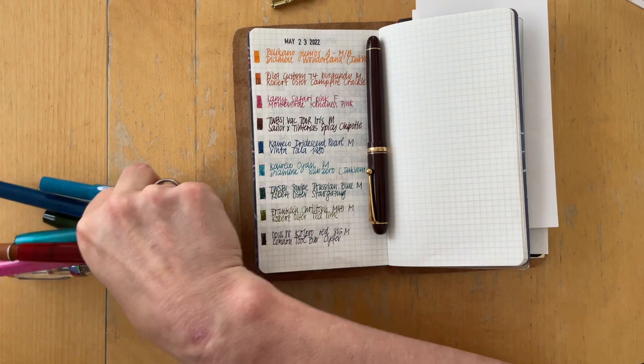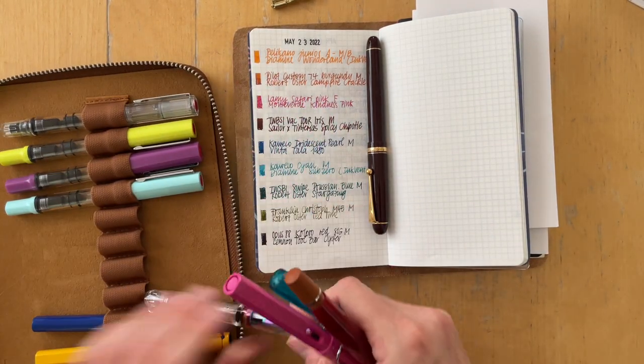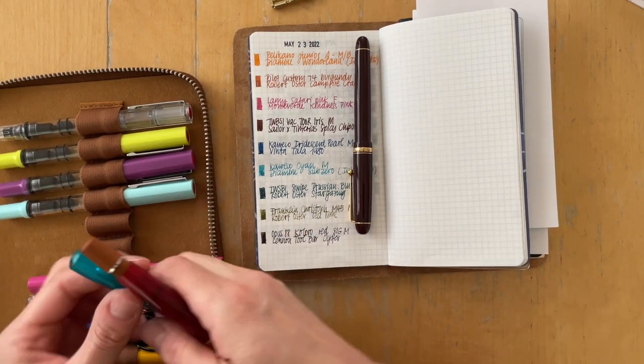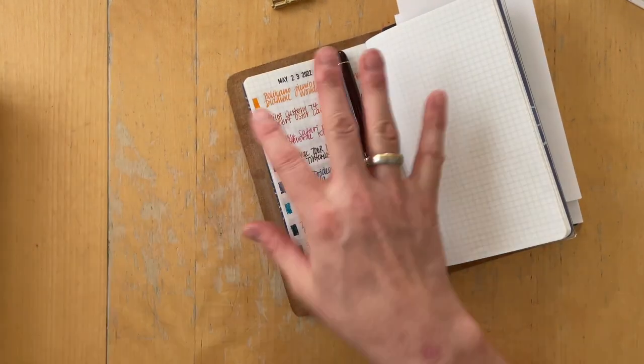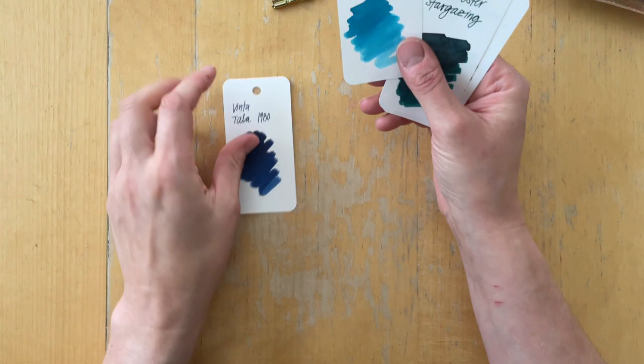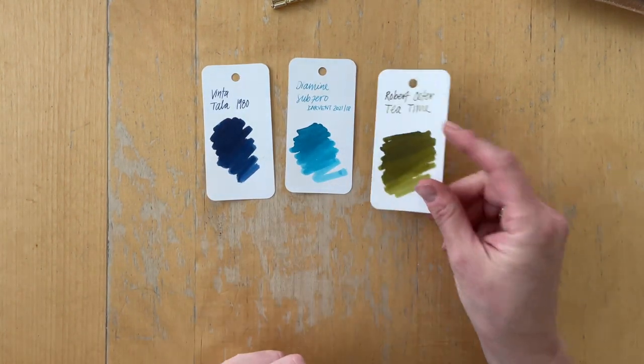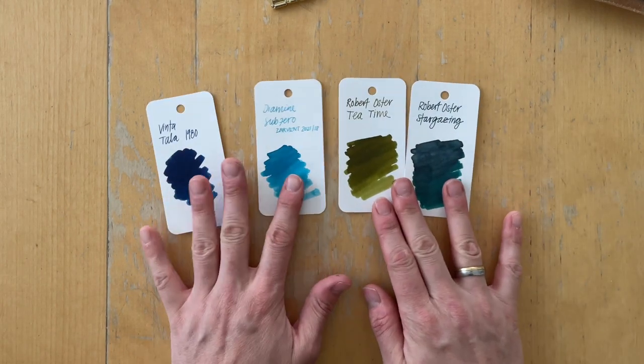And then I went and picked a color palette that would work with the colors that were still left over. And let me just grab those and show those to you. So that was the Vinta Tala, the Diamine Sub-Zero, the Robert Oster Tea Time, and the Robert Oster Stargazing.